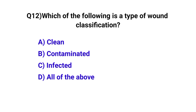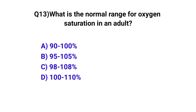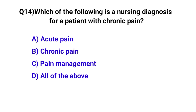Question number twelve: which of the following is a type of wound classification? The correct option is D, all of the above. Question number thirteen: what is the normal range for oxygen saturation in adults? The correct option is 95 to 100 percent. Question number fourteen: which of the following is a nursing diagnosis for a patient with chronic pain? The correct option is B, chronic pain.